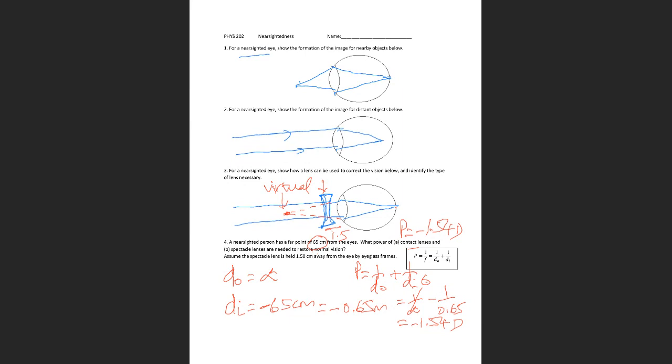The 65 becomes 65 minus 1.5, which is 63.5. That's in centimeters, so it'll be negative 63.5 centimeters. In meters, it'll be negative 0.635 meters. That's going to be our image distance.